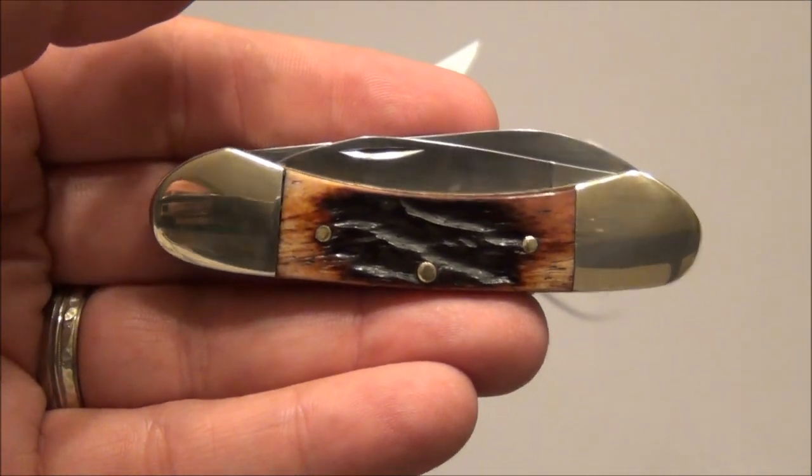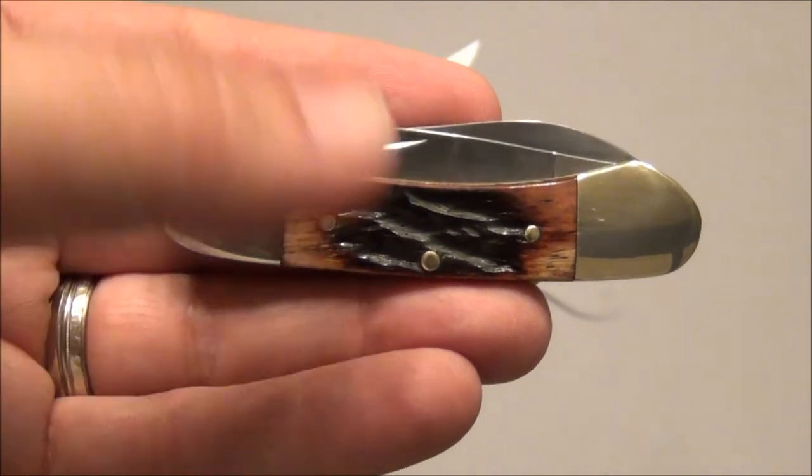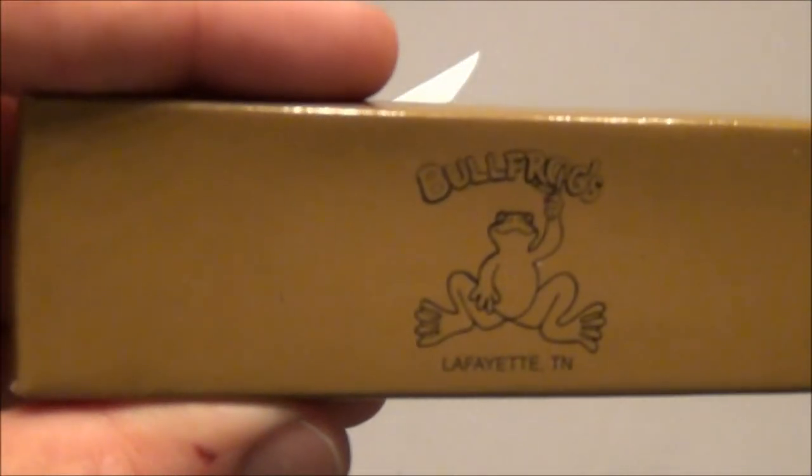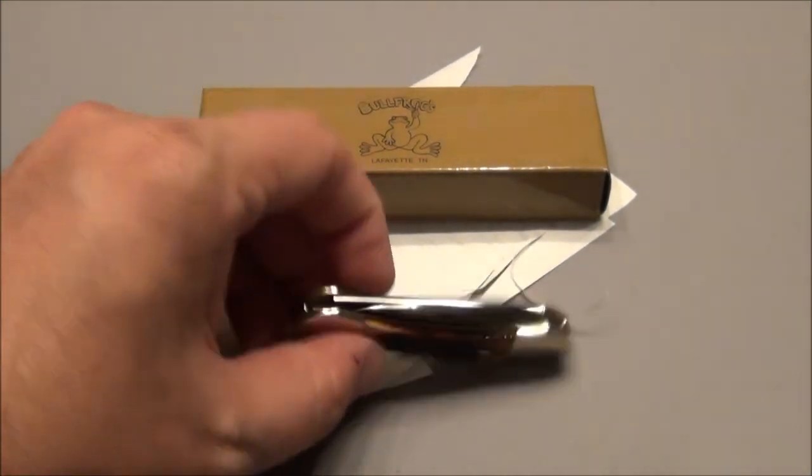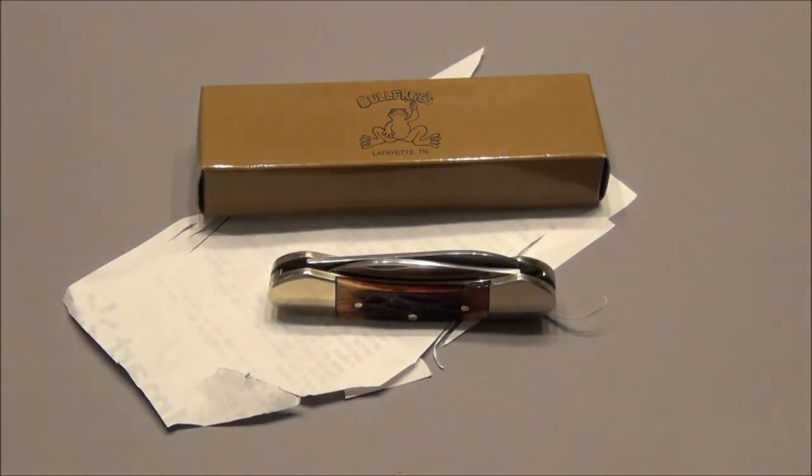So anyways, just wanted to show you a fun little bullfrog butter bean canoe shaped knife. All right, Fort Worth Glock Guy out.